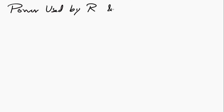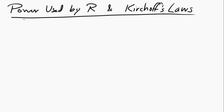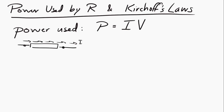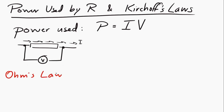Let's take a look at the power used by a resistor and Kirchhoff's Laws. We already looked at the power that's used by a resistor — the power is equal to the current through the resistor times the potential difference across the resistor. What's new here is we're going to take that expression and mix it with what is commonly called Ohm's Law, V equals IR, or R equals V over I, depending on how you write it.